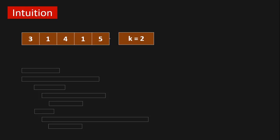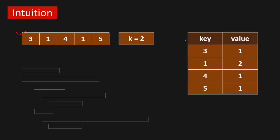Now how can we solve this problem? Let's assume we're given this array as input and k equals to two. First, we're going to construct a hash map where the key equals to the element itself and the value equals to its number of appearances. Three appears once, one appears twice, four appears once, and five appears once.